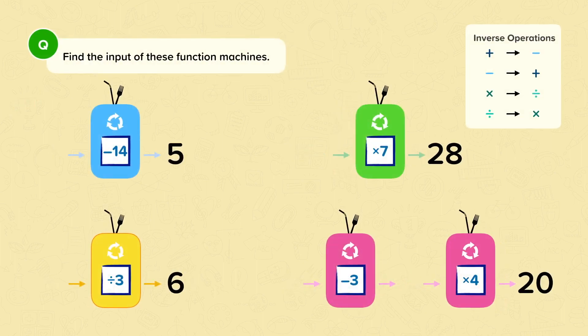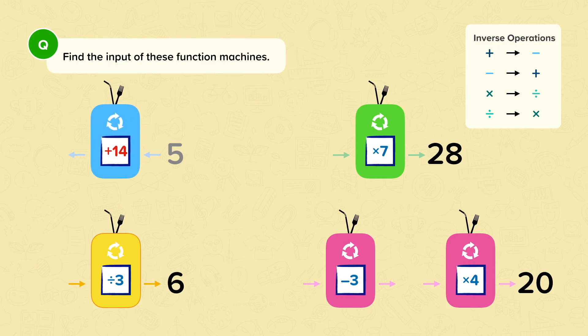For this question, we need to find the input of these function machines. Here, we need to use the inverse operations. So something take away 14 equals 5. If we have the 5 going in backwards, we need to use the inverse of taking away 14, which is adding 14. 5 add 14 is 19. So 19 take away 14 is 5, and we've found the input of this function machine.